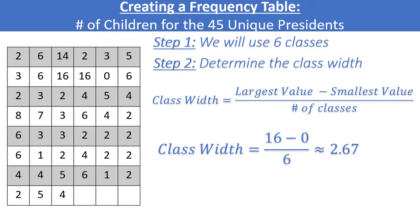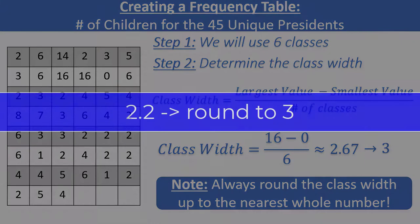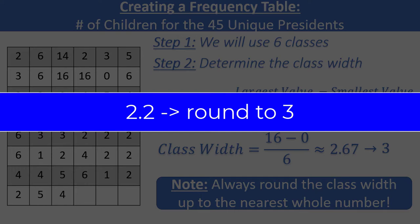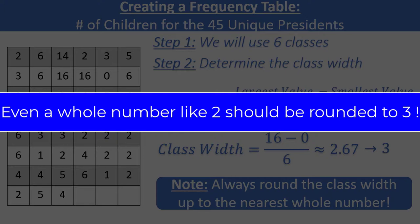Here is an extremely important point: you need to round the number you get from this calculation up to the nearest whole number, even if conventional rounding rules would tell you to round down. So we round 2.67 up to 3. Note that even if our calculated class width was 2.2, we would still round up to 3. Even if you got a whole number such as 2, you would still round up to 3. If you don't round up, your classes will not end up containing all of the data.